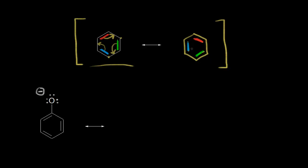The actual benzene molecule is a hybrid of these two resonance structures. If you're drawing on a sheet of paper you could use one or the other, but remember that it's actually the hybrid, because dot structures are just not perfect ways to represent molecules or ions. Those are our resonance structures for benzene.